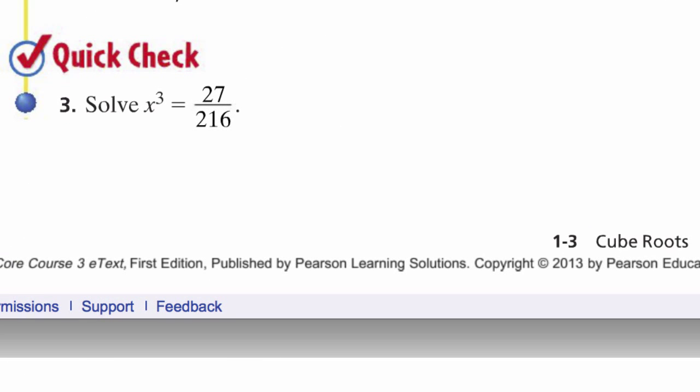How about the quick check for example problem number three? It says solve X cubed equals twenty-seven over two hundred and sixteen. Work carefully and make your selection from the choices below.